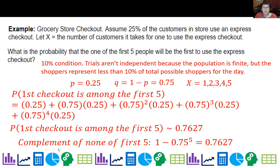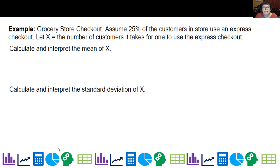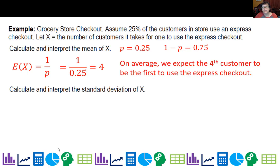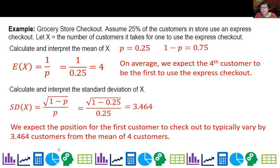Let's calculate and interpret the mean of x. The expected value is 1 over 0.25, which is 4. On average, we expect the fourth customer to be the first to use Express checkout. The standard deviation is the square root of (1-0.25) over 0.25, which equals 3.464. We expect the position to typically vary by 3.464 customers from the mean of 4.